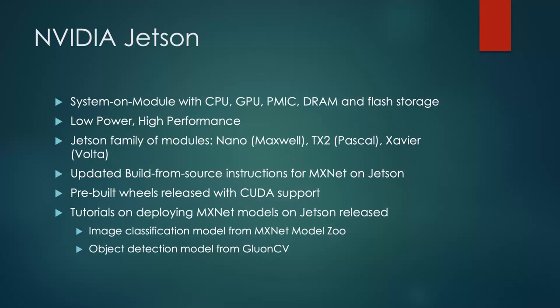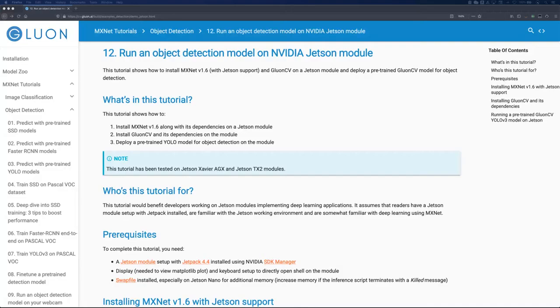This year, we have updated build-from-source instructions for Jetson builds on the MXNet website. Both AWS and NVIDIA have released pre-built Jetson wheels that come with CUDA support. We now have tutorials on deploying MXNet models on Jetson. This includes a tutorial on deploying an image classification model from the MXNet model zoo, and a tutorial on deploying a GluonCV object detection model from the GluonCV model zoo. This is the GluonCV object detection tutorial.